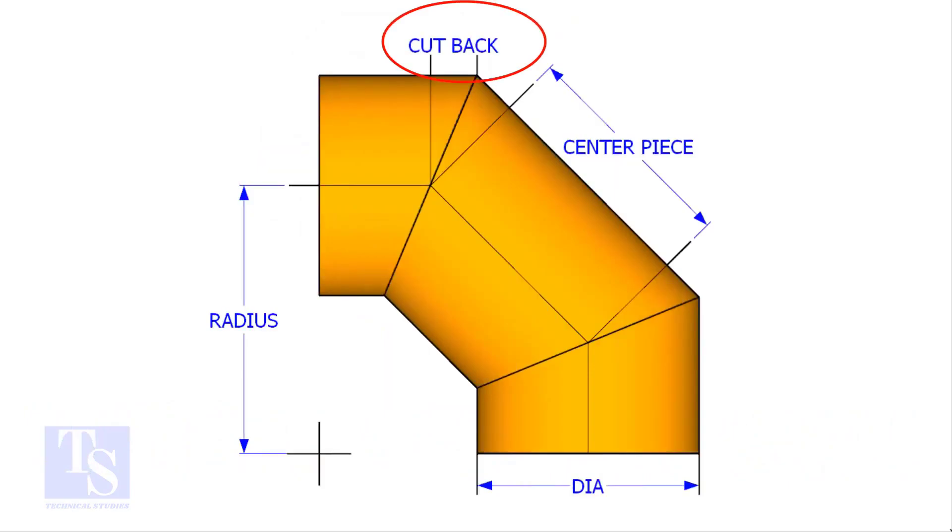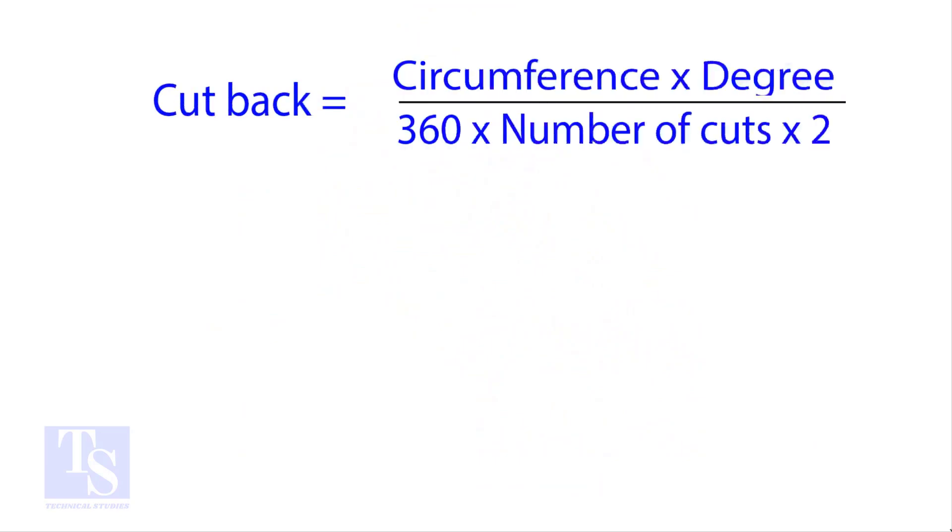The standard method to calculate the cutback is: circumference into the wanted degree, divided by 360 into number of cuts into 2.